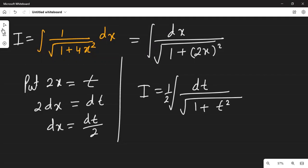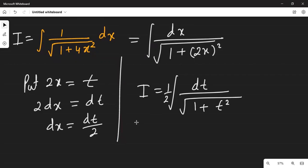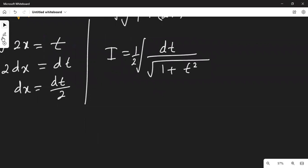Now, this is a formula. Integration of dt over square root 1 plus t square will be the same as 1 by 2 log of t plus square root 1 plus t square plus c. So this is the formula.